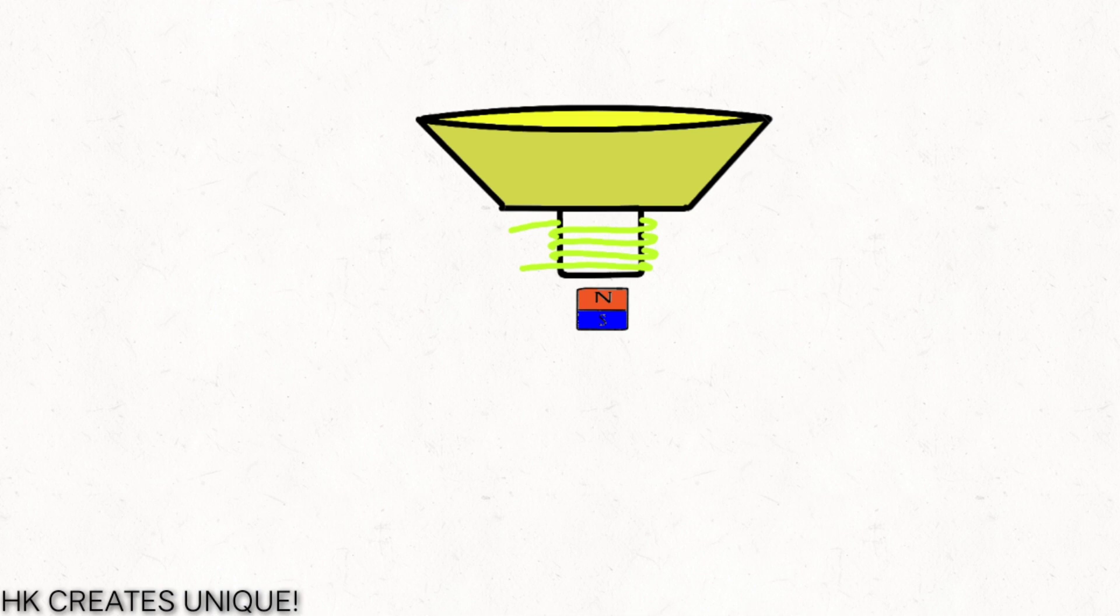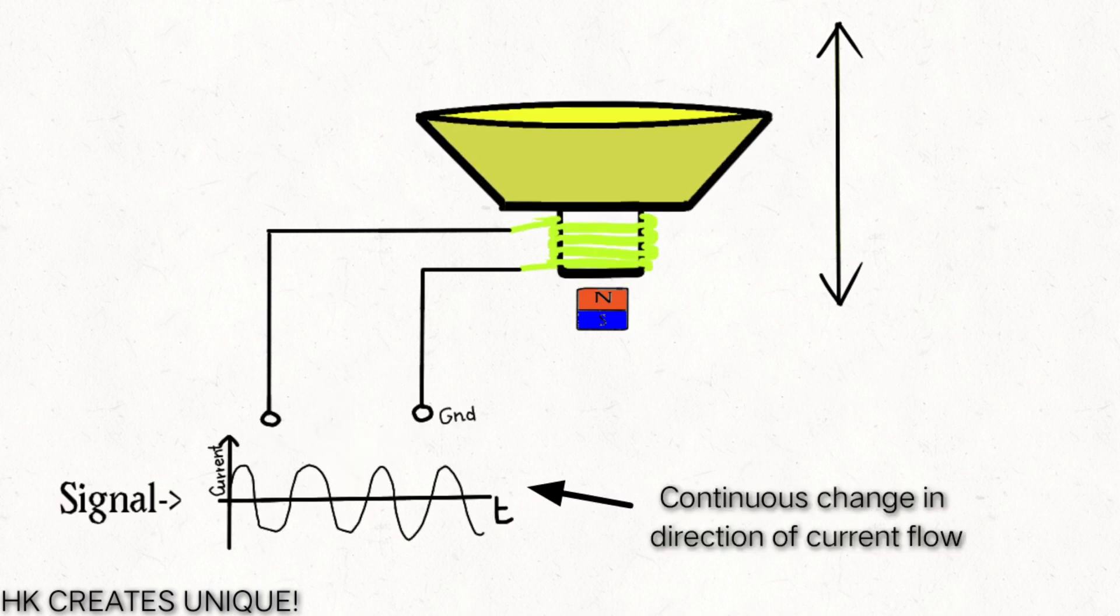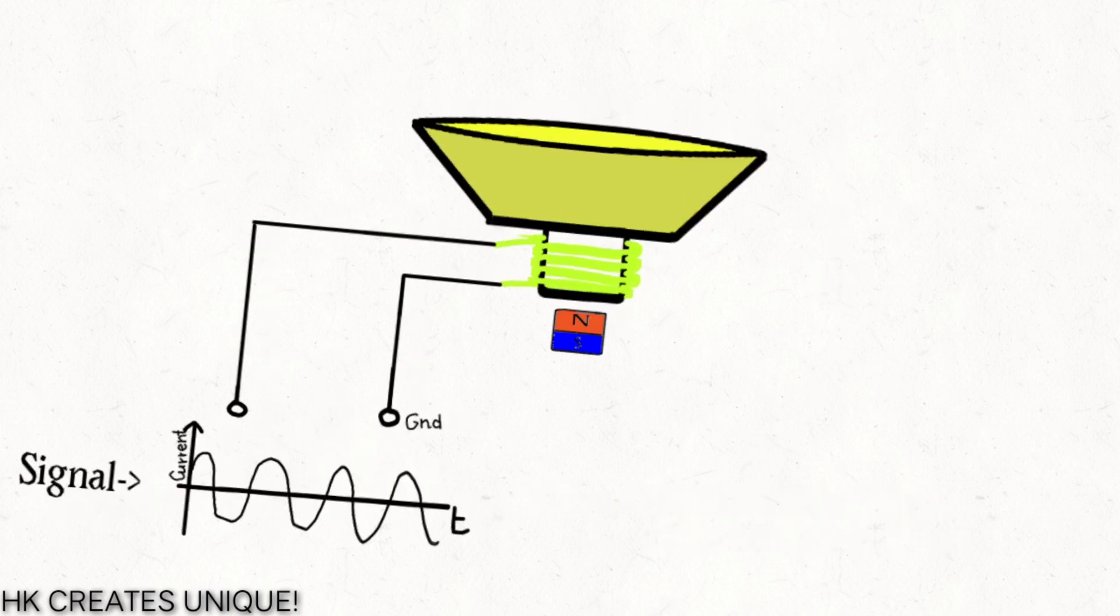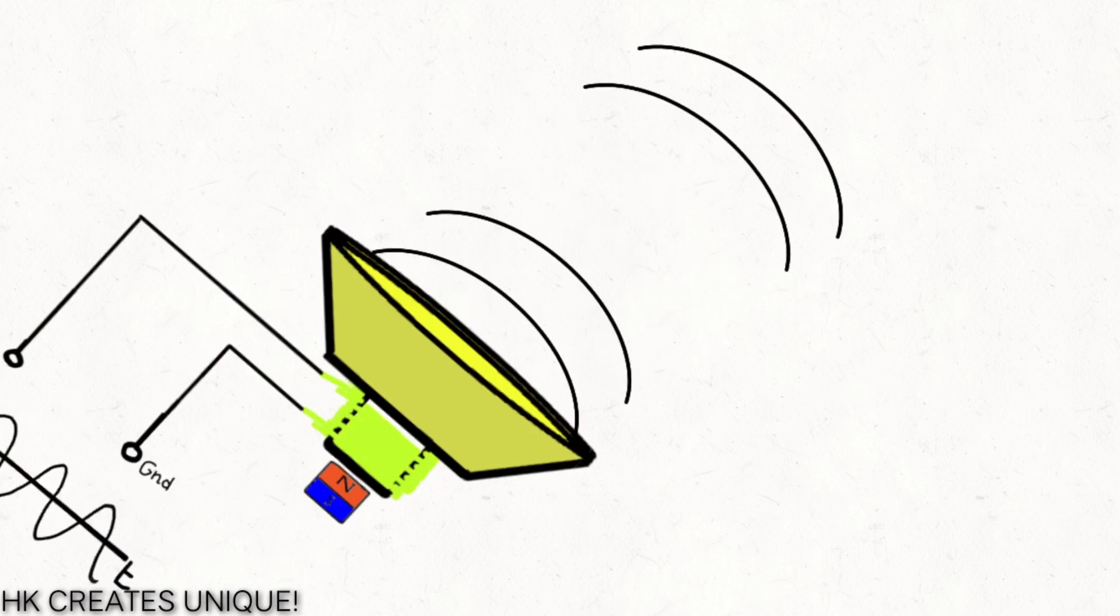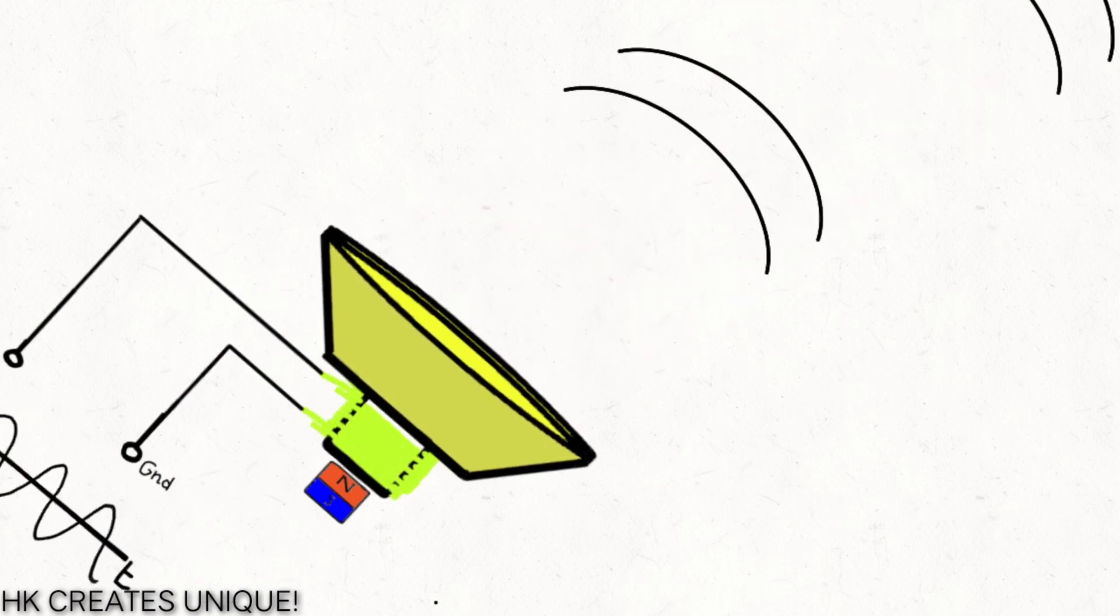Now think for a moment. In the speaker, if you reverse the direction of current flow through the voice coil continuously, the voice coil will attract and repel the permanent magnet continuously. Therefore the diaphragm moves back and forth continuously as well.